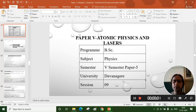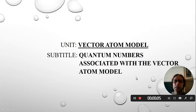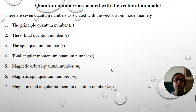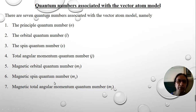Hello everybody. In this session I will discuss the quantum numbers associated with the vector atom model. There are seven quantum numbers associated with the vector atom model, namely principal quantum number, orbital quantum number, spin quantum number, and total angular momentum quantum number. In the presence of a magnetic field, three more quantum numbers are introduced to explain the behavior of atoms: magnetic orbital quantum number, magnetic spin quantum number, and magnetic total angular momentum quantum number.